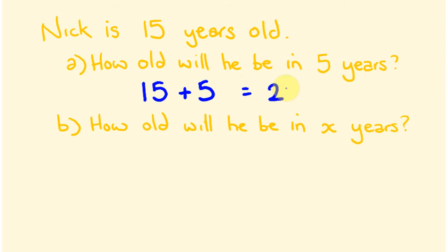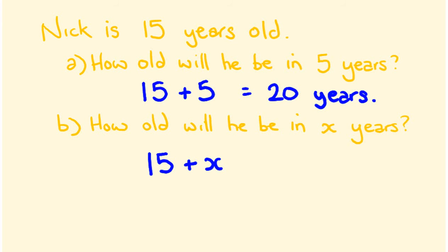So, how old will Nick be in five years? He's currently 15, so 15 plus 5 gives us 20 years old. Now algebraically, he's still 15 but instead of adding five we add x, so he'll be 15 plus x. We typically write this as x plus 15 — the convention is to put terms with pronumerals first and plain numbers last. Both forms are equally correct.